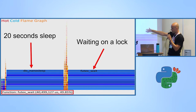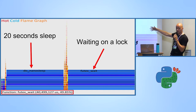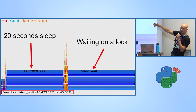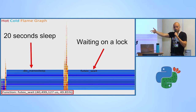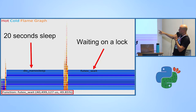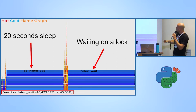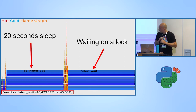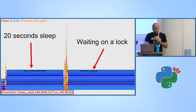We can clearly see that we were idle most of the time. We can see that 50% of our idle time we just sleep for 20 seconds, which is not surprising because we had that sleep call. But the most interesting part is that we wait 50% of our idle time waiting on locks — and that is a performance issue.